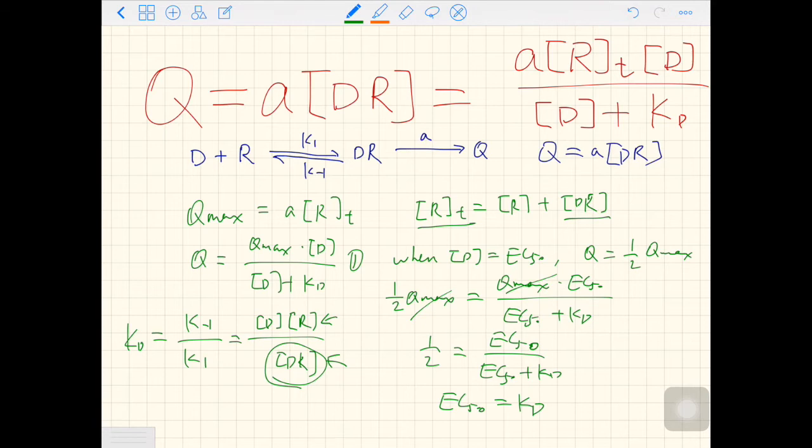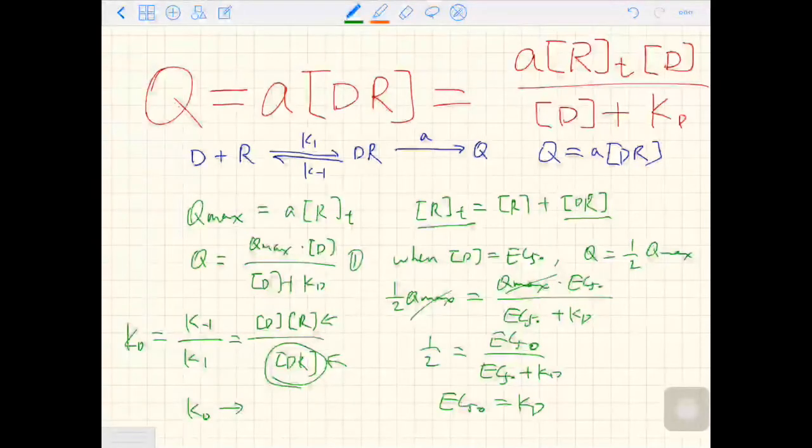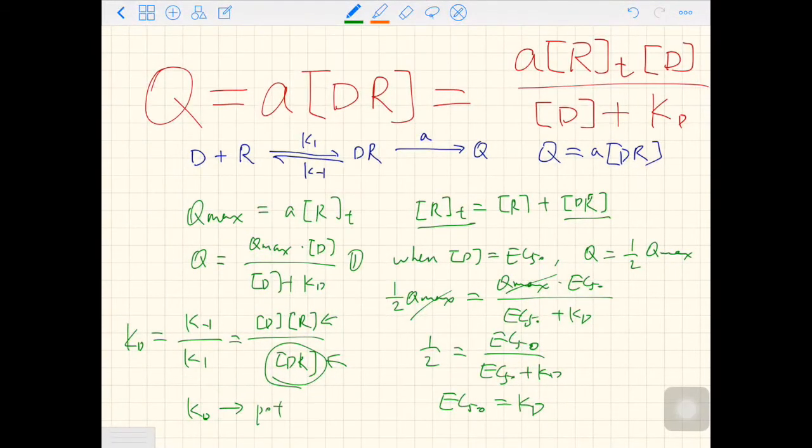Therefore, a smaller KD will result in a more potent drug. Smaller KD and more potent drug. As we set EC50 as KD, so a smaller EC50 means a more potent drug. Because you need a smaller concentration to achieve 50% of the maximum response.